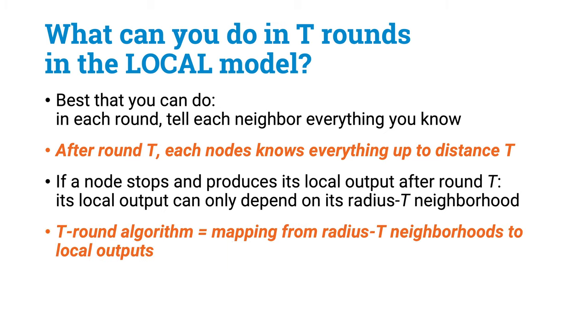If you stop after t rounds and announce your local output, then whatever you output has to be a function of the information that was there in the network within distance t from you. So we have another equivalent way to define algorithms in the local model: an algorithm that runs in time t is simply a mapping from radius-t neighborhoods to local outputs. This means that time and distance are interchangeable in the local model, and therefore fast distributed algorithms are also highly localized.